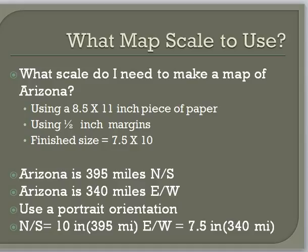Then I figure out the length and width of Arizona — how much do I need to shrink it north-south and how much do I need to shrink it east-west. I got those dimensions from Googling. I also need to decide whether the map fits better portrait or landscape. Because Arizona is longer north-south than it is wide, I'll use a portrait orientation. That means I need to reduce the 395 miles to fit on a 10-inch piece of paper, and reduce the 340 miles to fit on a 7.5-inch width.